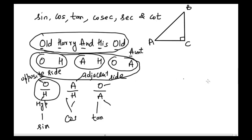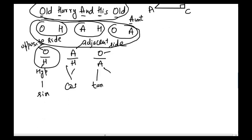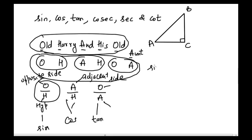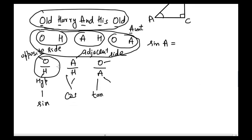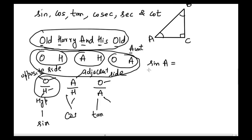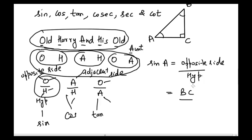Let's find the value of sine A in a right-angle triangle. Since sine is opposite side divided by hypotenuse, and the opposite side to angle A is BC while the hypotenuse is AB, we get: sine A = BC / AB.